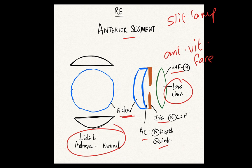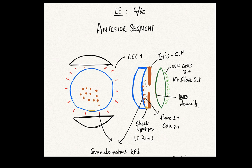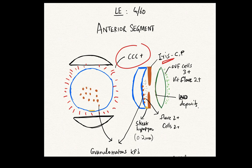In the left eye, the lids and annexes were normal, but there was circumcorneal congestion — dilated blood vessels surrounding the limbus — which is different from diffuse congestion. The iris was fine, but just between the iris and cornea in the anterior chamber, and more importantly at the back of the cornea, you can see some deposits. These deposits are called granulomatous keratic precipitates.